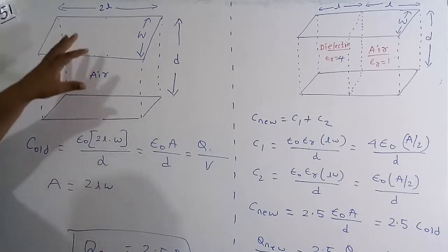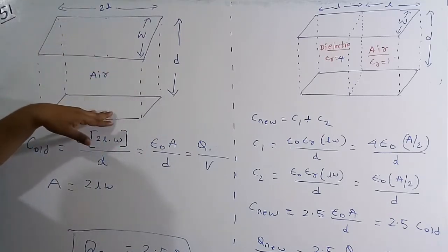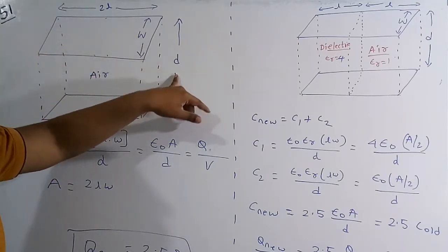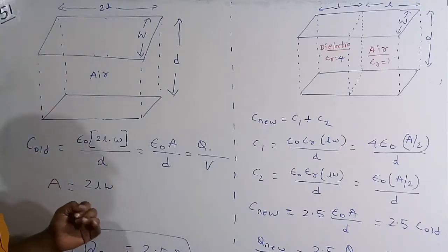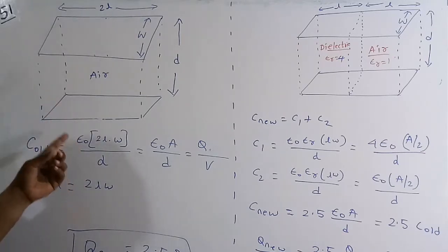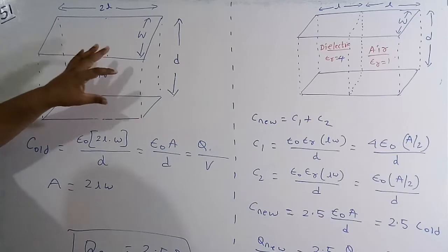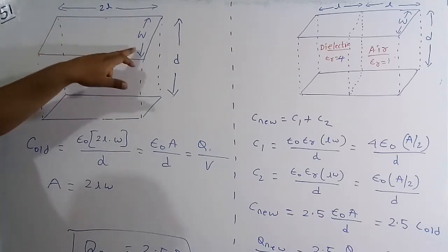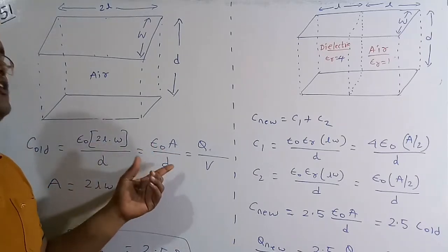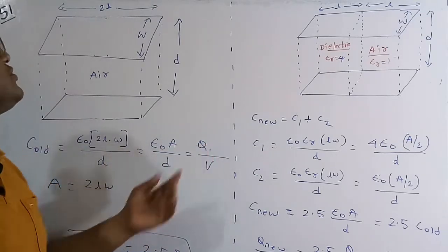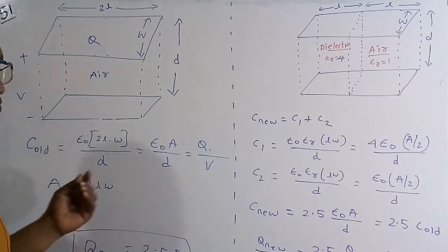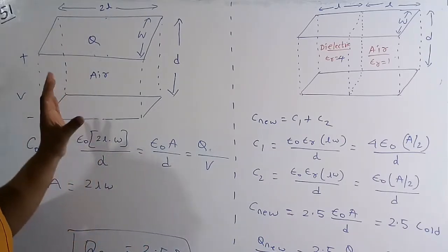For this parallel plate capacitor, initially there is no slab. The length is L, width is W, and d is the distance between the plates. The capacitance C_0 equals epsilon times area divided by d, where epsilon_r equals 1 for air and area equals L times W. Since capacitance equals charge by voltage, initial charge is Q and voltage is V, giving C_0 = Q/V.